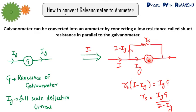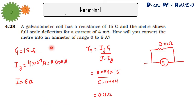Now let's solve a numerical. This numerical is from our NCERT only, question number 4.28. A galvanometer coil has a resistance of 15 ohm, so G is 15 ohm, and the meter shows full scale deflection for a current of 4 milliampere. So Ig is 4 milliampere, that is 0.004 ampere.